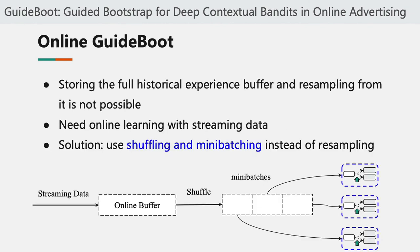The second part of this paper introduces online GuideBoost, which allows GuideBoost to be used in an online learning scenario. The reason we need online GuideBoost is that storing the full historical experience buffer and resampling from it is not possible in real applications, so we need online learning with streaming data. Our solution is to use shuffling and mini-batching instead of resampling.